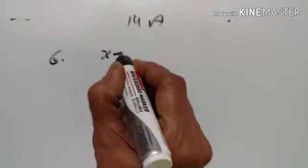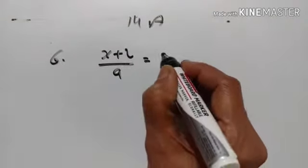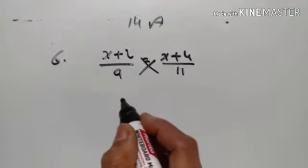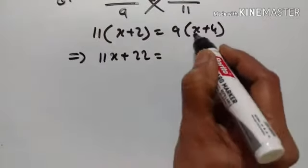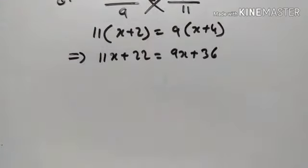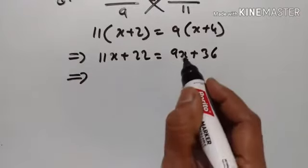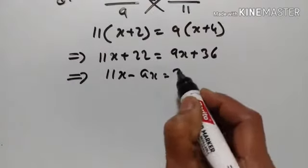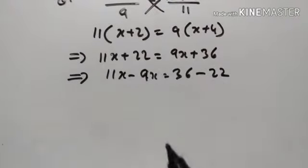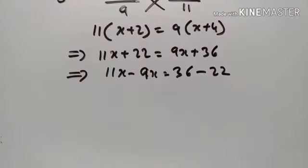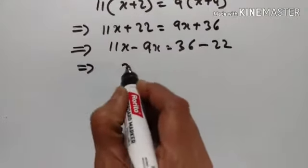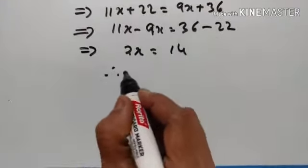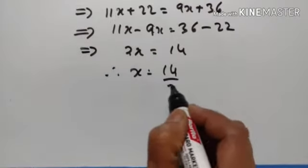6th problem: x plus 2 upon 9 is equal to x plus 4 upon 11. On cross multiplication, 11x plus 22 is equal to 9x plus 36. 9x is transposed and it becomes minus 9x. 11x minus 9x is equal to 36 minus 22. 2x is equal to 14. 36 minus 22 is equal to 14. Therefore, x is equal to 14 divided by 2, that is 7.